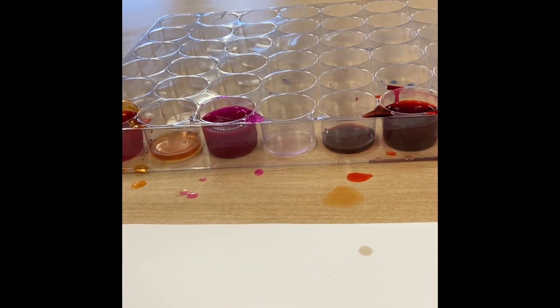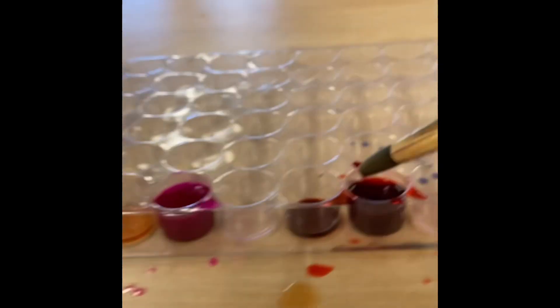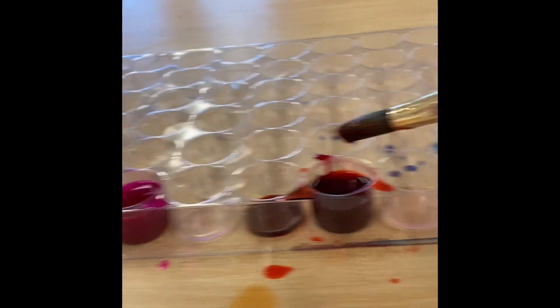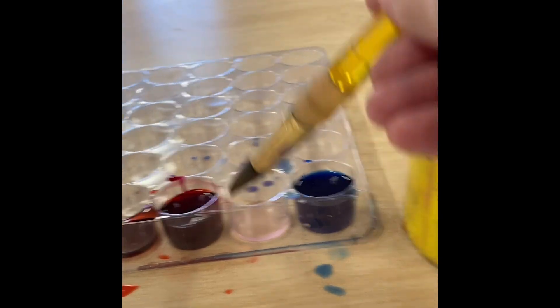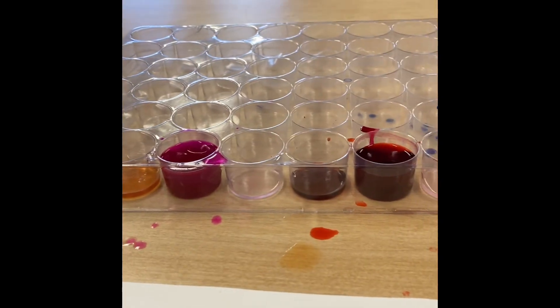Today we're going to be using something called liquid watercolor. The color is already in the paint, but just like other times when we use it, when we switch colors, we have to go swish, swish, swish, and on your rag you can go wipe, wipe, wipe, because you don't want the colors to get mixed up.